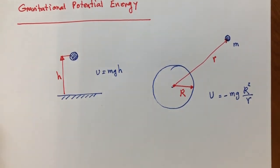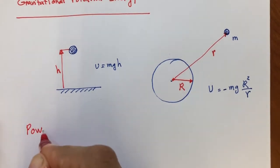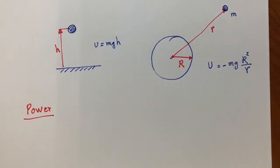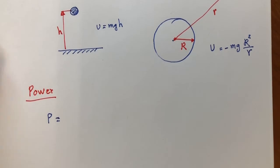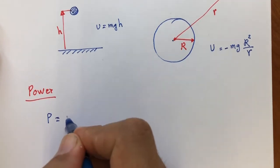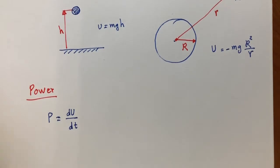Another topic I'm going to cover in this video is power. Power is energy per time — how much energy you are putting into your system over time. We usually define instantaneous power as dW or dU divided by dt. The average power is the average work or energy you are putting into your system divided by delta t, the total time.